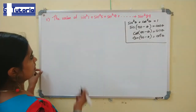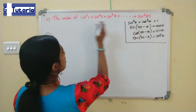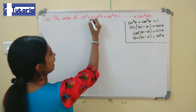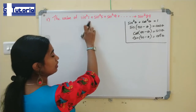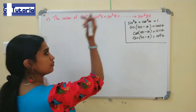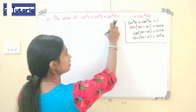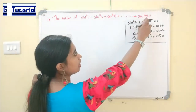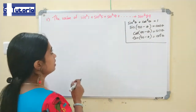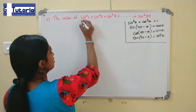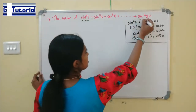Now let us do the problem. This is an AP where the value of the angle increases by 4. So we have sin²1, sin²5, sin²9, and so on up to sin²89. We can pair the first term and the last term.